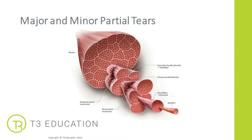This diagram, taken from the Munich Consensus, shows the difference between major and minor partial muscle tears. You can see the muscle belly, secondary fascicle bundles, primary fascicle bundles, the muscle fibre and myofibra. A minor partial tear often happens in the primary bundle of fascicles — a smaller bundle within the muscle belly. A moderate partial tear involves the secondary bundle of fascicles, so a bigger bundle has been damaged.